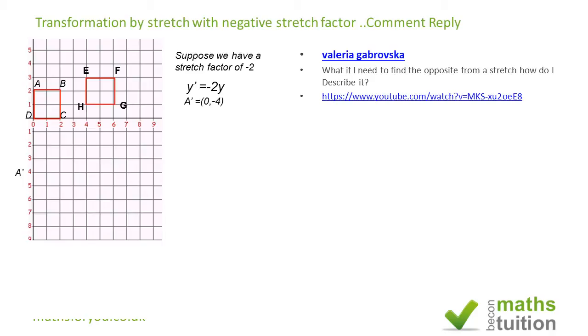Similarly, B is going to be there, so now B is (2, -4), and C prime is (2, 0), and D prime is (0, 0). So C prime and D prime coincide because C and D lie on the invariant line.